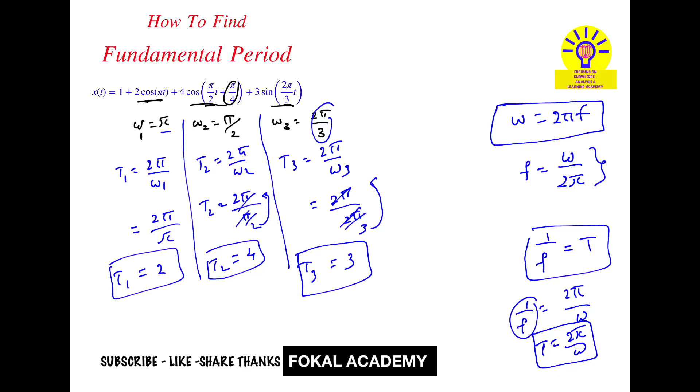Now we can easily find fundamental time period from the time periods. That is nothing but fundamental time period T₀ equal to LCM of time periods, that is T₁, T₂, T₃. So find the LCM for 2, 4, 3. From that will get the value is 12.